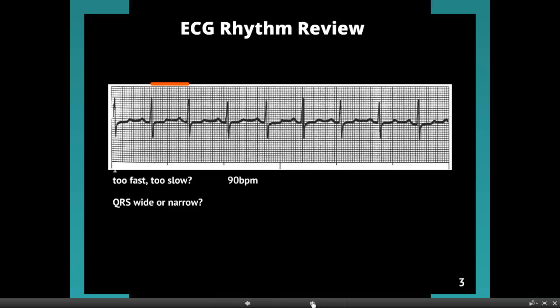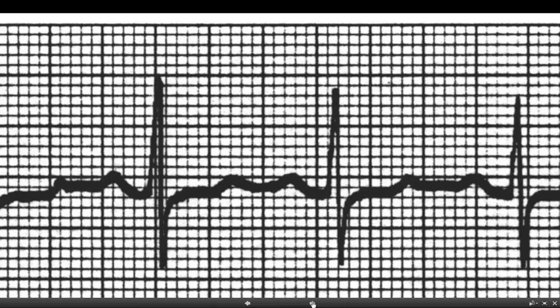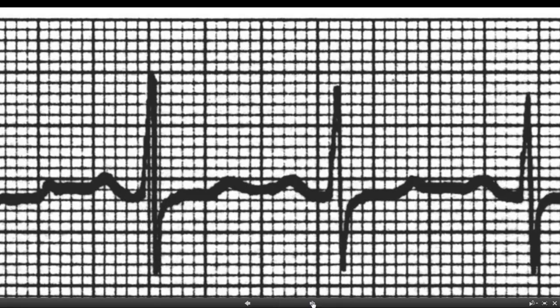Now we're going to ask the question: is the QRS wide or narrow? We'll zoom in here and take a look at one representative sample. Here we go to the QRSs — you see a P-wave right here. The QRS would follow that. That's the big spiky looking thing. And after that, it should be a T-wave, and I see a little bump over here — there's our T-wave. So now we have our components. We're looking for the width of the QRSs, and we want it to be under 0.12 seconds, which is three small boxes.